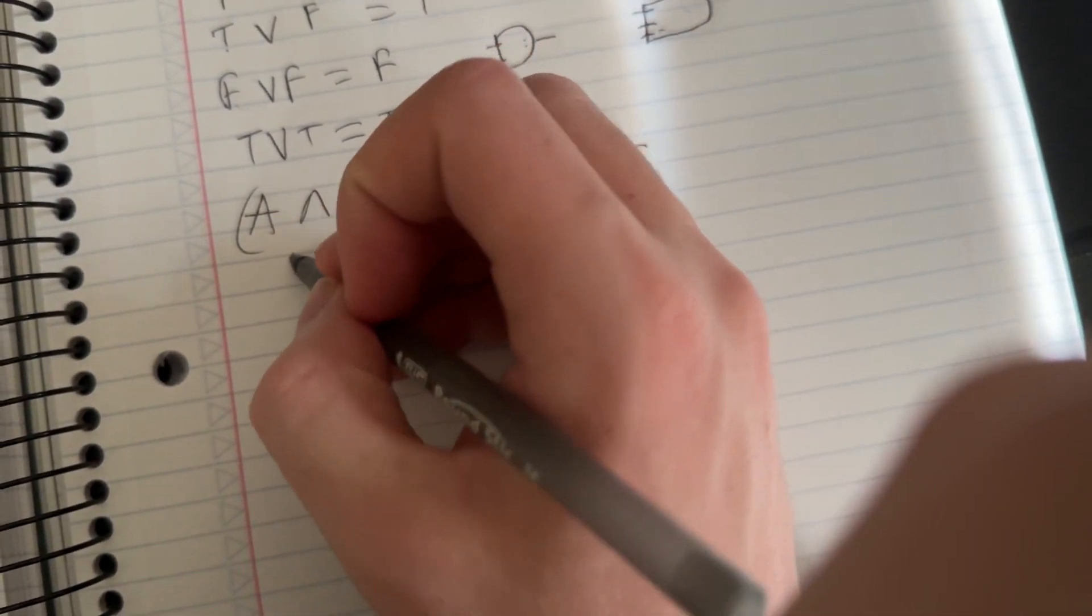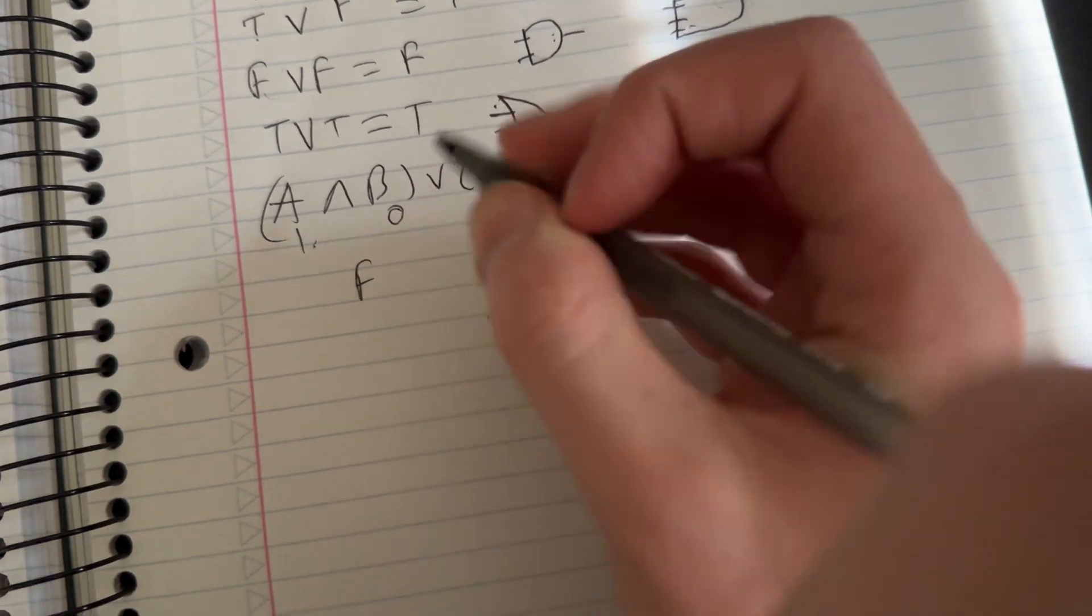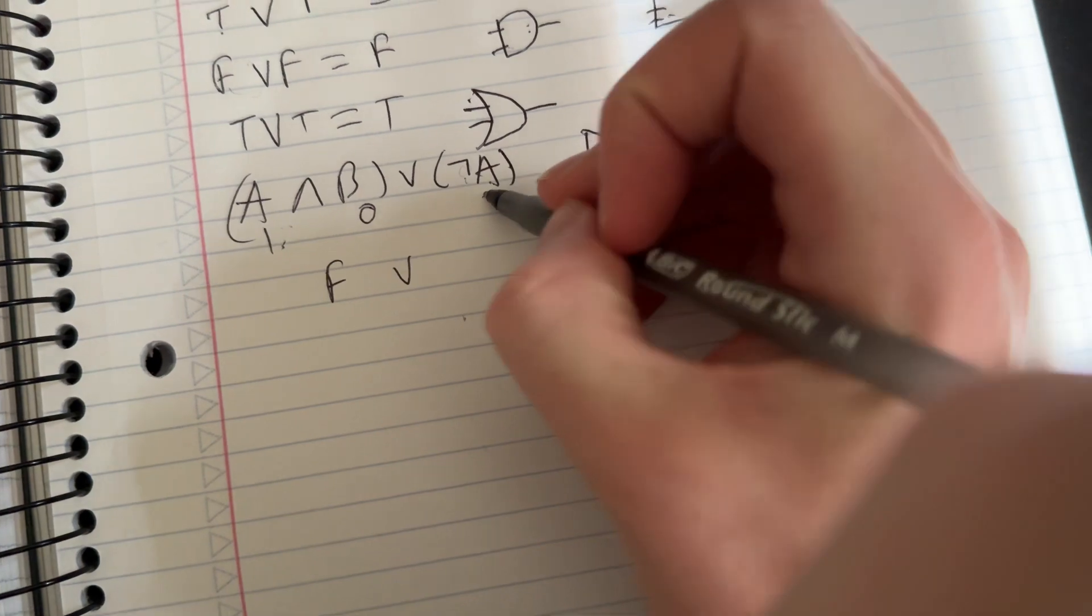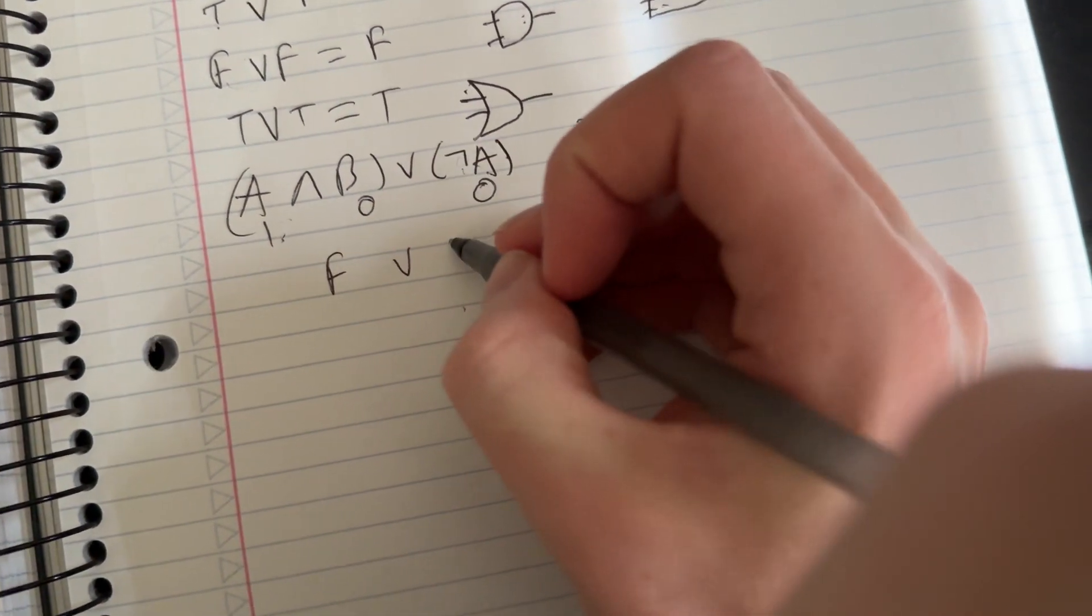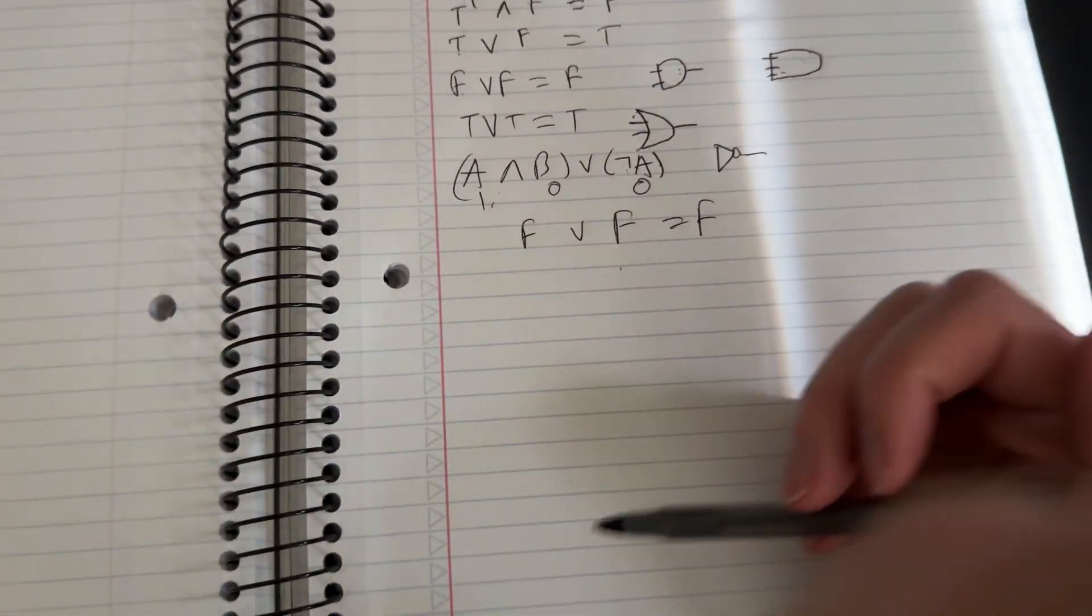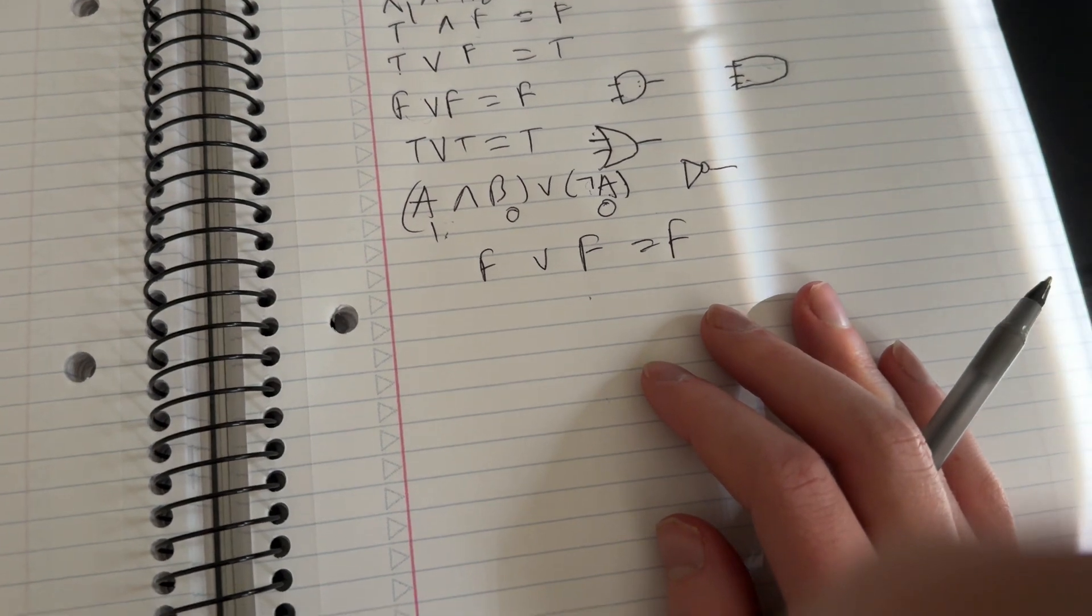And we'll say if we draw the truth table, let's say this is one and zero, this is false. Or since A is one, this means that this is zero. So false or false is false. See, now those are the three simple logic gates.